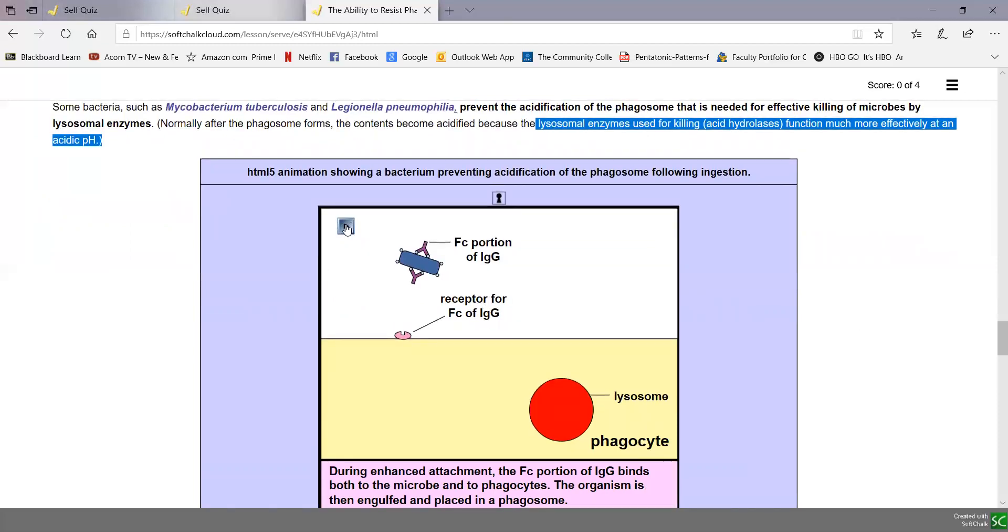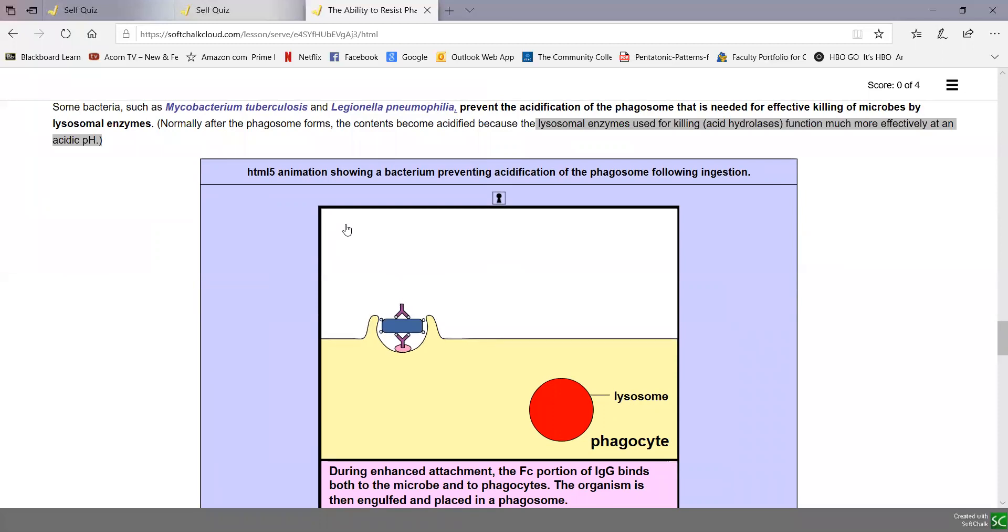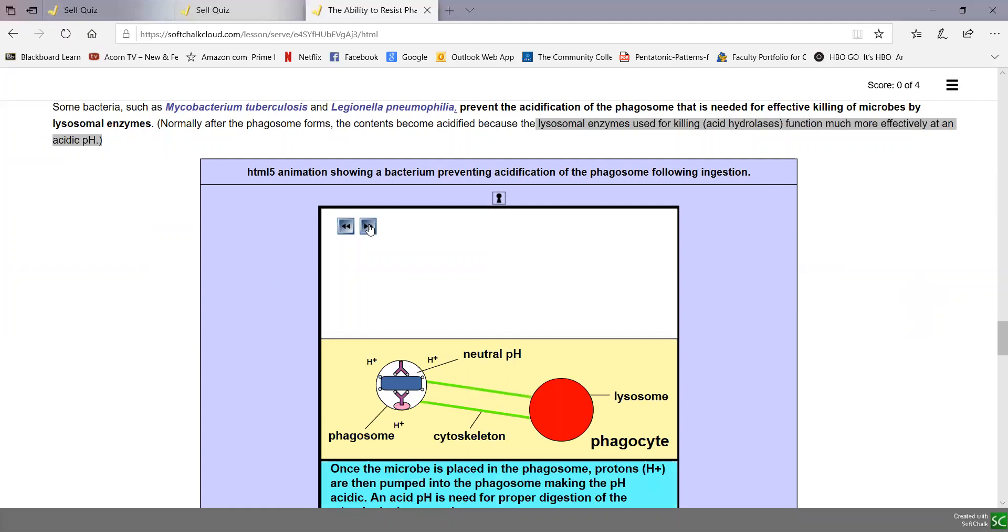In this animation, we see a bacterium entering by enhanced attachment with IgG or opsonization. It's engulfed and placed in a phagosome. At that point, a proton pump is supposed to pump protons into the phagosome. Right now the phagosome has a neutral pH, but the acid hydrolases in the lysosome require an acid pH to be active and to break down the cellular proteins of the bacterium. Normally protons or hydrogen ions are pumped into the phagosome, making it acidic. But some bacteria can interfere with a proton pump so the protons are not pumped into the phagosome.